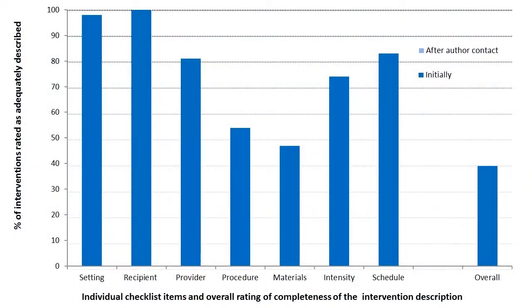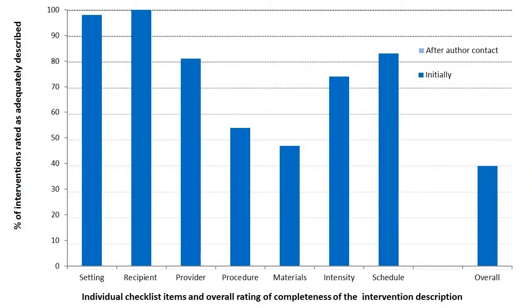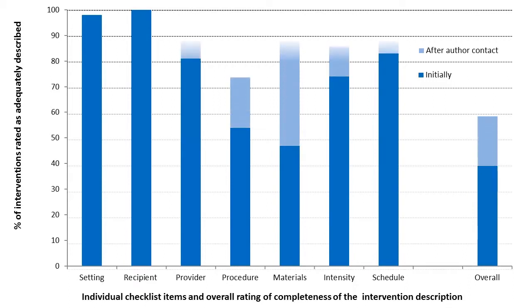So, after we'd contacted the authors as best we could, the overall intervention rating changed to 59% of the interventions being rated as complete. You can see that the materials item is the item that was initially scored the worst, but actually improved the most.